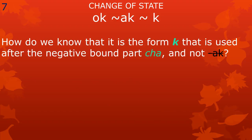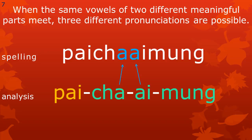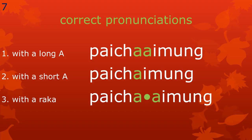But how do we actually know that it is the variant form ke which is used after the negative bound part cha, and not ak? From lesson 9, we know that when the same vowels of two meaningful parts meet, three different pronunciations are possible, as in the word bai chai mung, which is spelled with two letters a next to each other. One letter a comes from the meaningful part cha, the other from the meaningful part ai. Because these two different meaningful parts meet — one ending in a and the other starting with a — three correct pronunciations are possible: with long a, with short a, and with a raqa in between the two vowels.